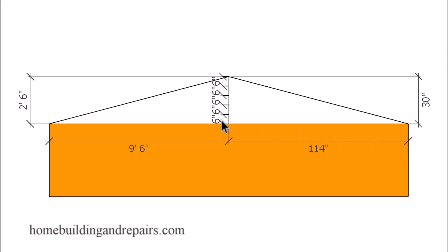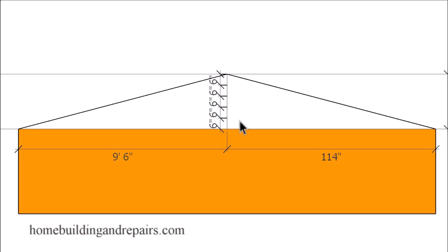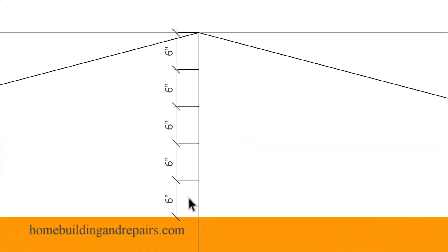And to calculate the ratio, all we need to do is pick a number. I'm going to pick the number five and divide it into 30. And that's going to provide me with five six inch increments. Then I'm going to do the same on the bottom. And that's going to provide me with five 22.8 inch increments.